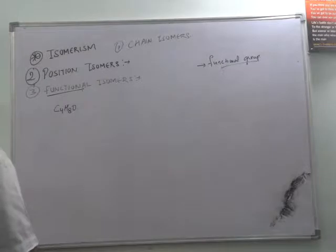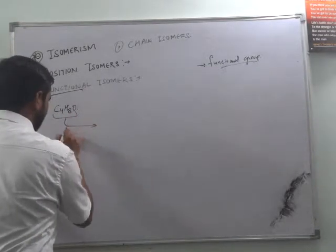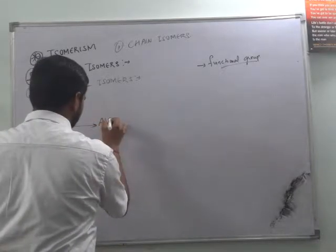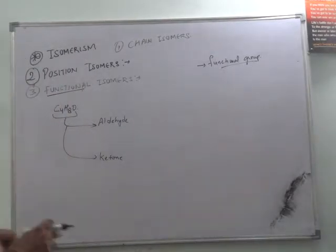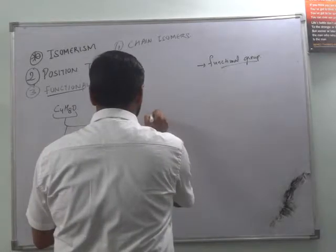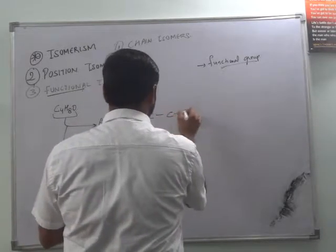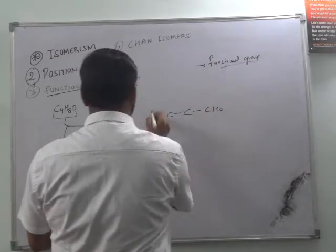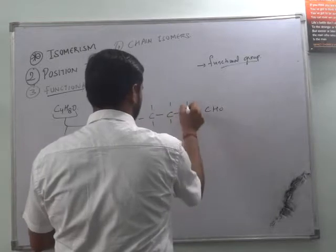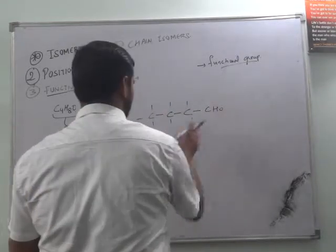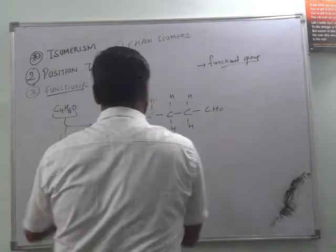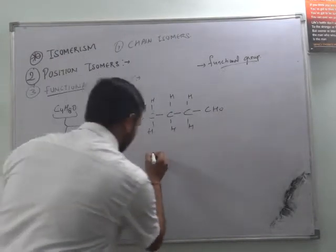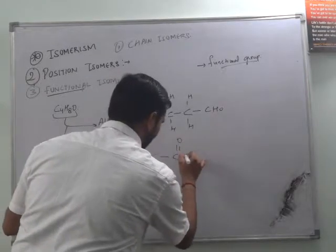this can be drawn with aldehyde and ketone. This is possible because the same molecular formula is used for both of them. The aldehyde structure of C4H8O, and when we are talking about the ketone structure it is like C double bond O, C, C.